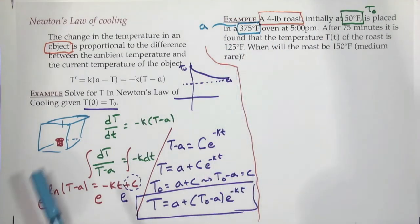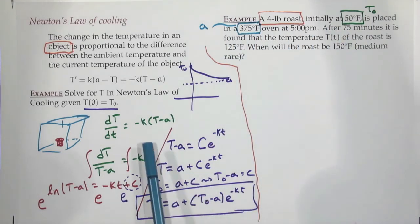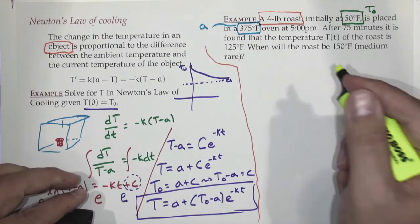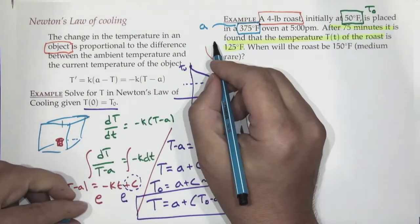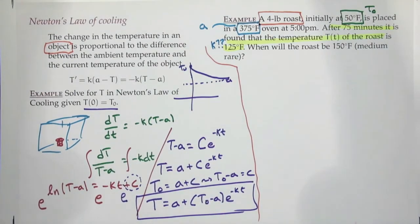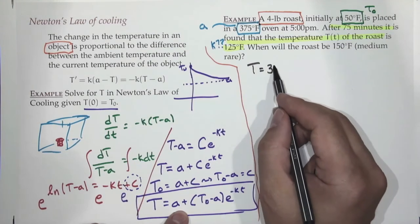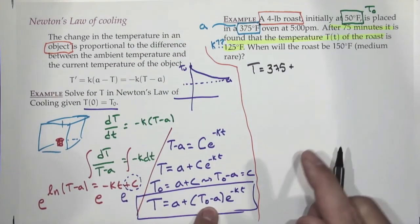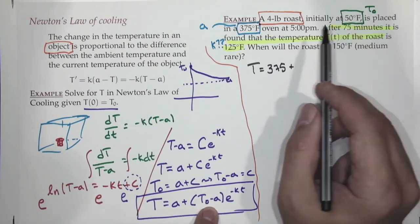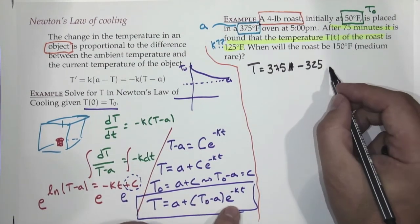After 75 minutes the temperature is 125, and we don't yet have K — that information will let us solve for K. Using T = 375 − 325·e^(−Kt), plug in t=75, T=125: 125 = 375 − 325·e^(−75K). Rearranging: 325·e^(−75K) = 250, so e^(−75K) = 250/325 = 10/13.